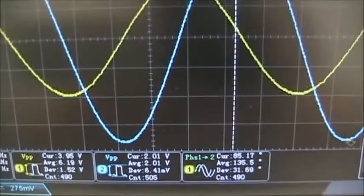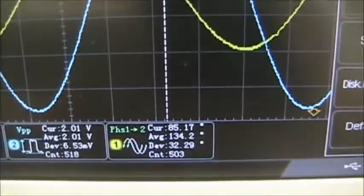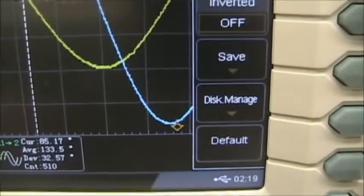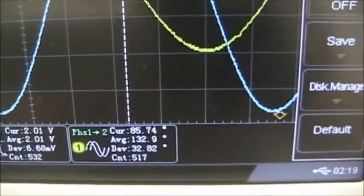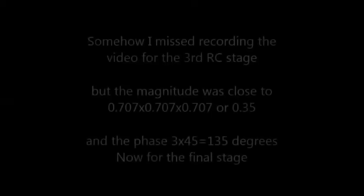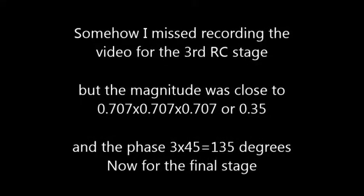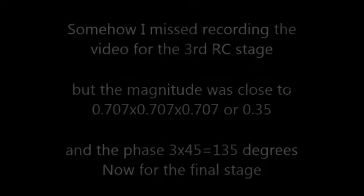We started out at 8 volts, and now we're about 4 volts peak-to-peak. The input is, again, the same. The phase is now very close to 90 degrees, 85.17.